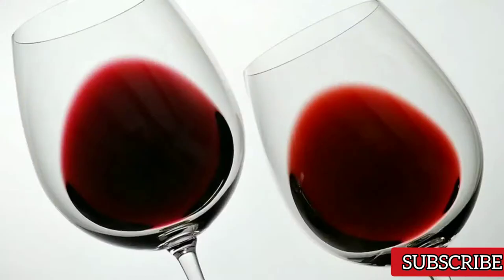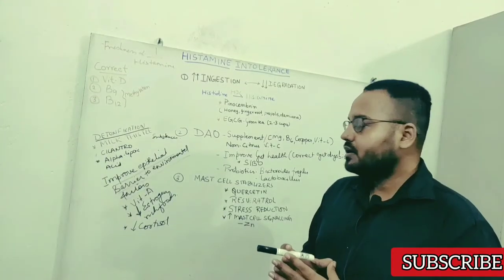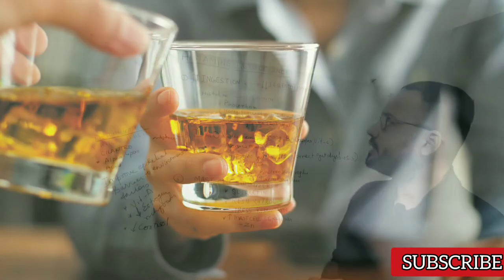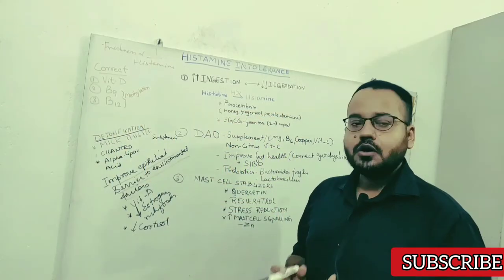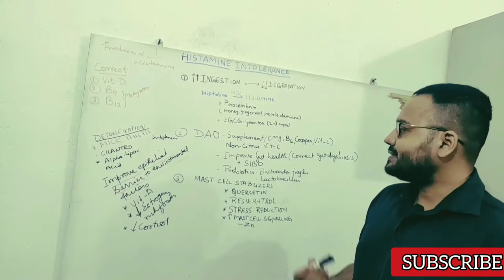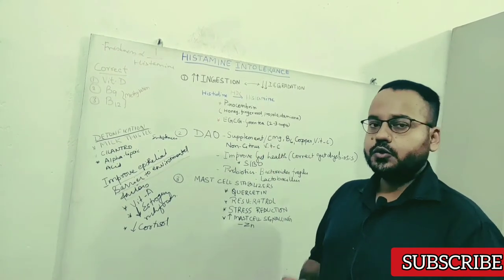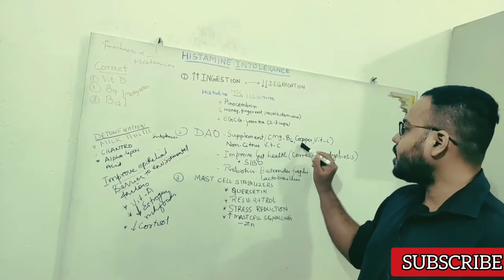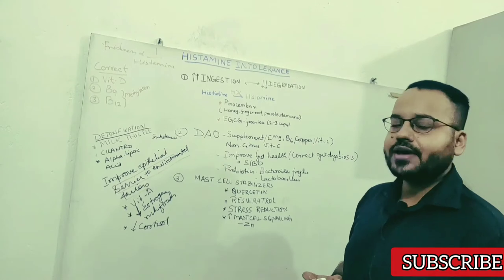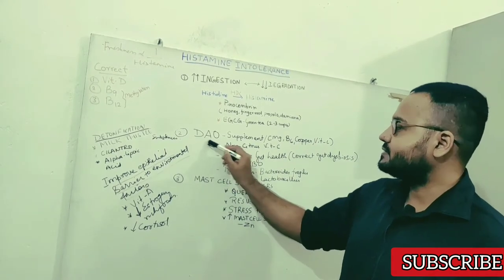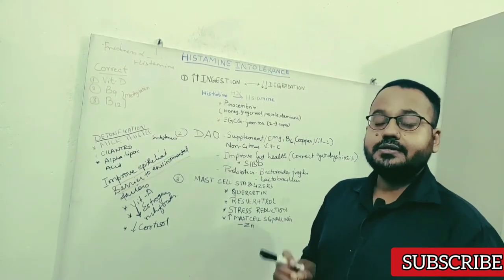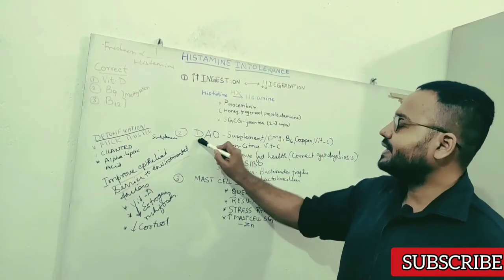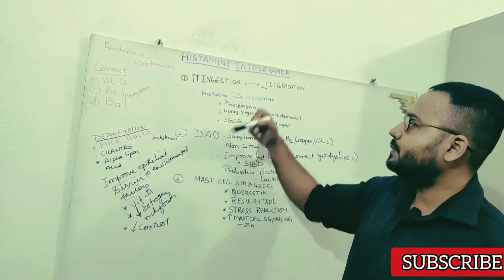Aged cheese, aged wine, aged meat, all those things can cause decrease in the activity of DAO leading to build up of histamine inside your body. So how to improve the functioning of DAO? You can take it either as a supplement or you can make sure that you are not deficient in magnesium, B6, copper and vitamin C because these are needed as cofactors for this enzyme. And that is why if you are prescribed anti-tubercular drugs that can decrease B6 and thereby predispose you to decreased activity of DAO and build up of histamine.